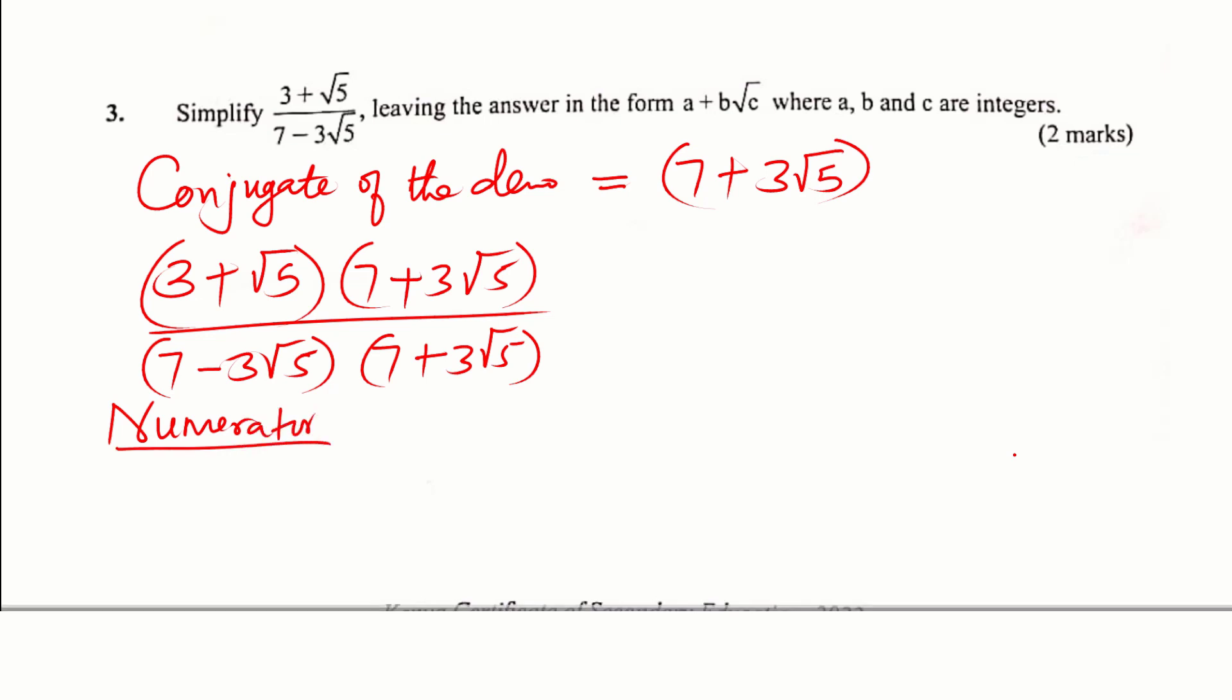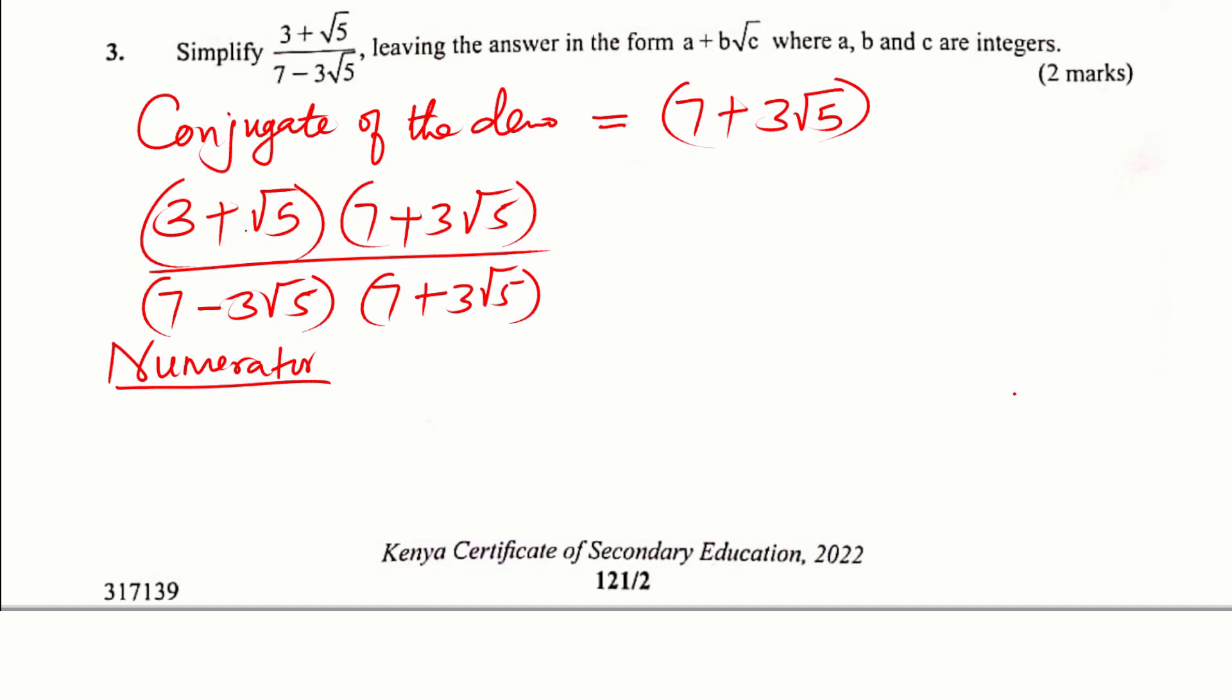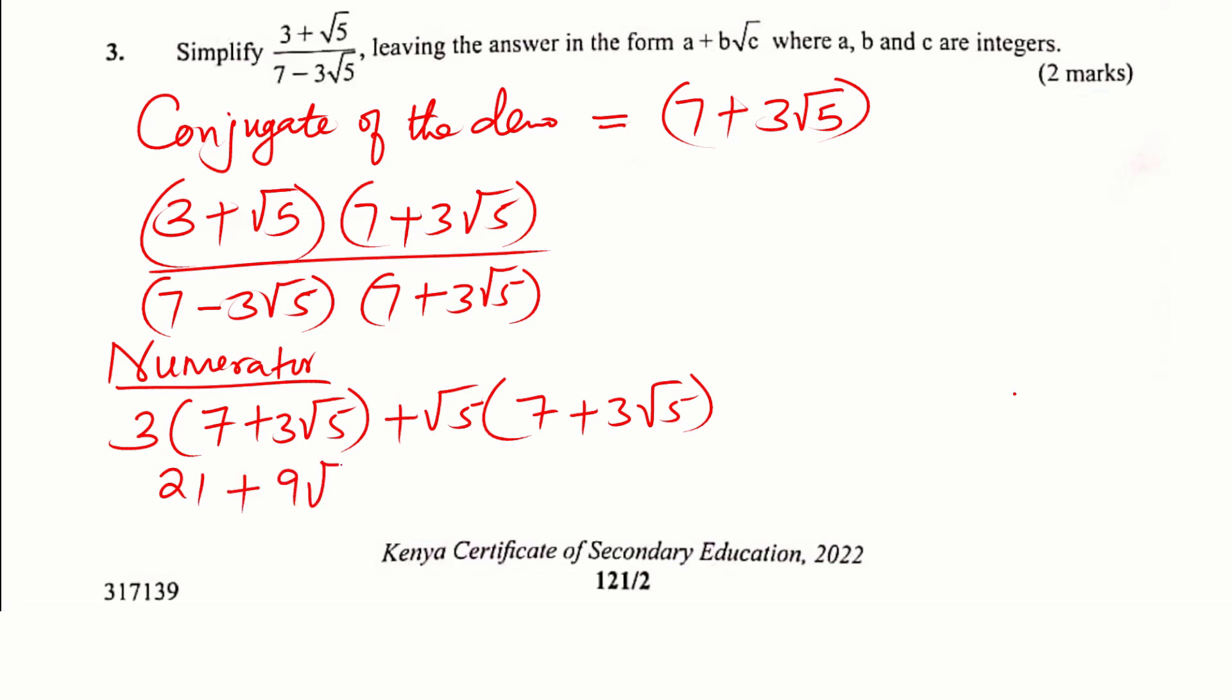Now we start with the numerator. For the numerator, we just need to expand 3 plus root 5. Take 3, multiply by 7 plus 3 root 5. Then you take plus root 5, multiply by 7 plus 3 root 5. In the brackets, we get 3 times 7, this would be 21, plus this would be 9 root 5.